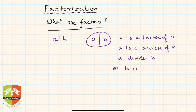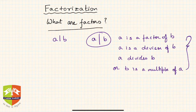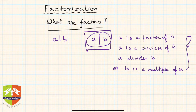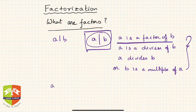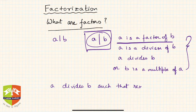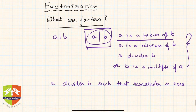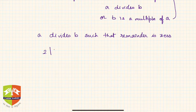All these statements are summarized as: a divides b. What does it mean? A is a factor of b means that when b is divided by a, the remainder is 0. For example, 2 is clearly a factor of 4 because 4 divided by 2 equals 2 and the remainder is 0.